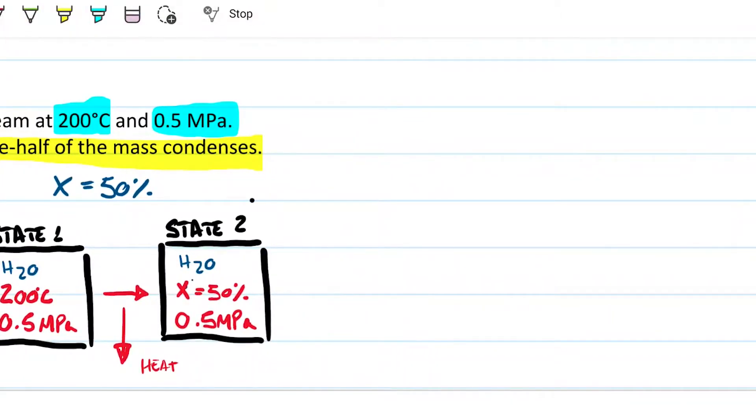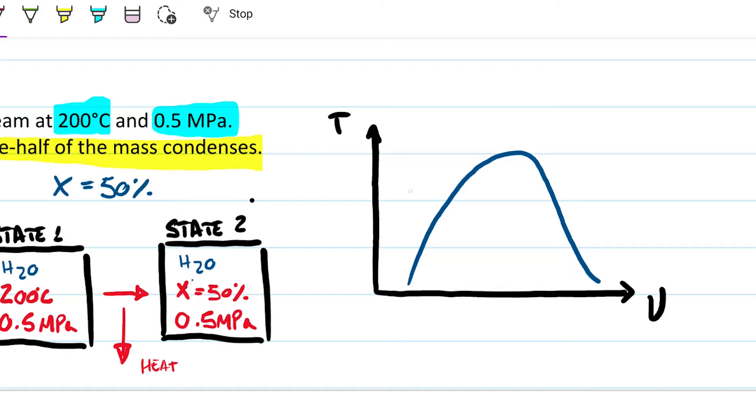To be able to draw the diagram, we can draw the diagram with the information we have and then we can add more information once we determine these other things. So we have temperature over here and specific volume on this axis. And we know there's the dome. Anything over here is going to be a compressed liquid or sub-cooled liquid. Over here we have a saturated mixture and over here we have a superheated vapor.